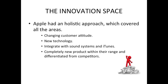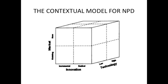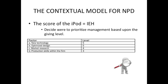The conceptual model for new product development can also be used to describe the iPod. The market was already existing, it was based upon a sub-platform system which made incremental innovation, and the required technology was quite high. The next step in the process is to locate the different factors and give them a score according to their importance to management. For example: new technology — level 5, optimized design — level 5, market research — level 4, production within the firm — level 3. This indicates where management should make the main effort.